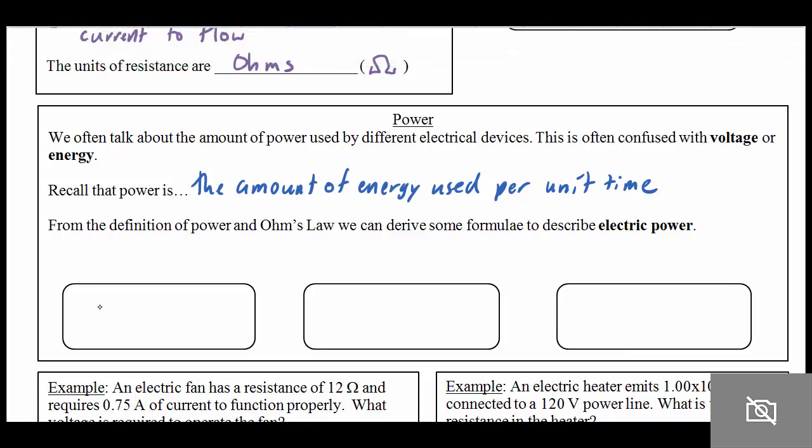We define the electrical power as P equal to I times V, which is the current times the voltage. The more current flowing, the more power is being used. The higher the voltage, the higher the push on those electrons, the more power is being used.